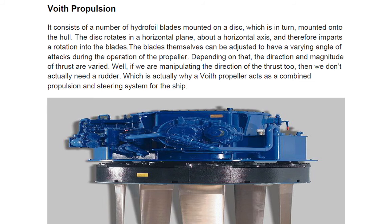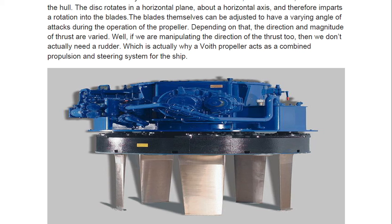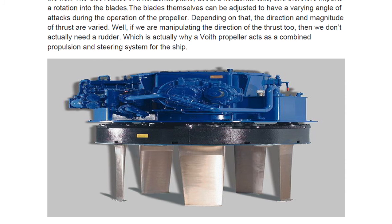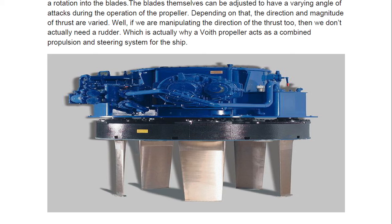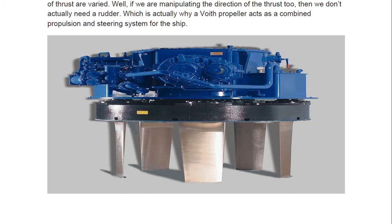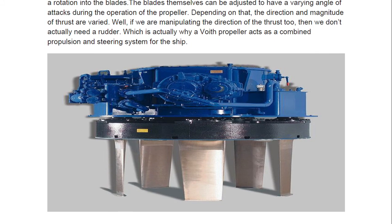A Voith propulsion system, less common in the shipping industry, consists of a number of hydrofoil blades mounted on a disc that is in turn mounted onto the hull. The disc rotates in a horizontal plane about a vertical axis, imparting rotation to the blades. The blades themselves can be adjusted to varying angles of attack during operation, allowing both the direction and magnitude of thrust to be varied. Since thrust direction is actively controlled, no separate rudder is needed, making it a combined propulsion and steering system.